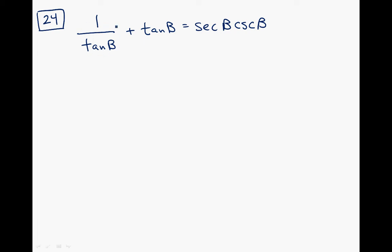Right here I'm seeing 1 over tangent beta. I'm probably going to call it B throughout the problem, but it's really beta, a Greek letter. This is really cotangent. 1 over tangent is cotangent. So I'm going to write this as cosine beta over sine beta. Tangent is going to be sine beta over cosine beta. Secant is 1 over cosine, and cosecant is 1 over sine.